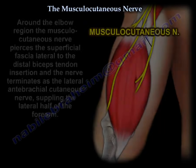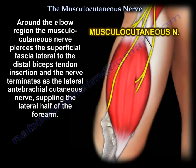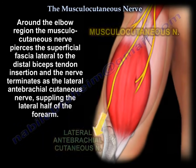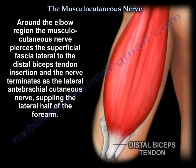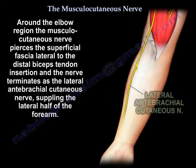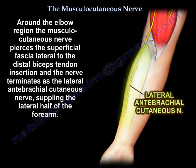Around the elbow region, the nerve pierces the superficial fascia lateral to the biceps tendon and terminates as the lateral antebrachial cutaneous nerve, which supplies the lateral half of the forearm.